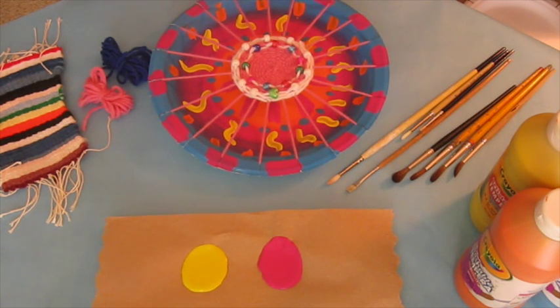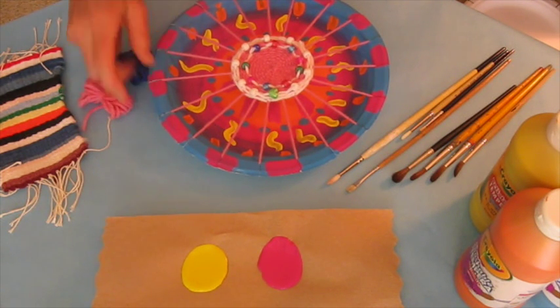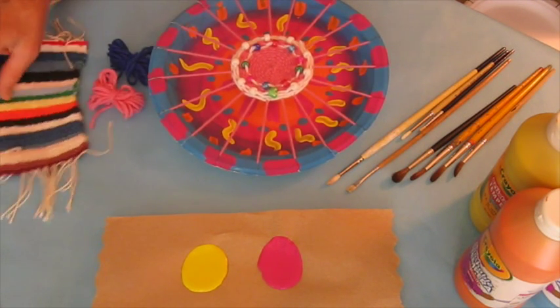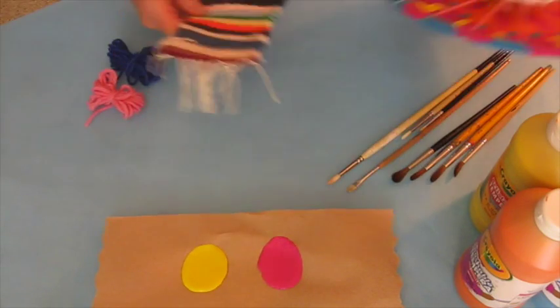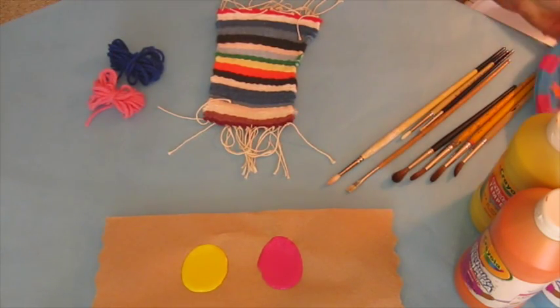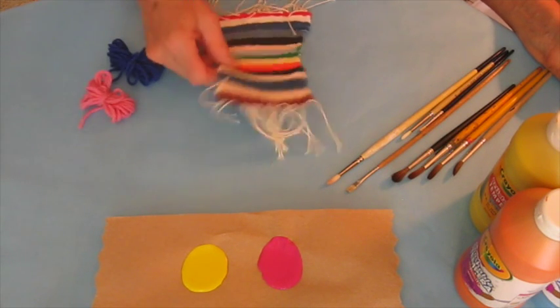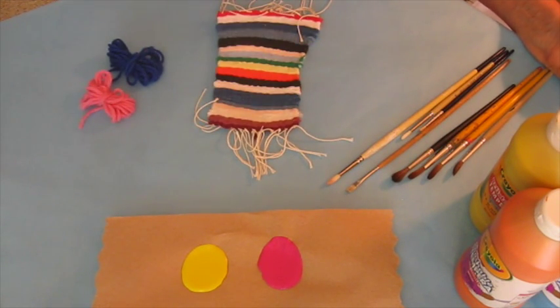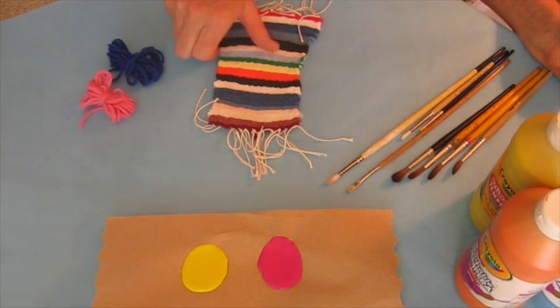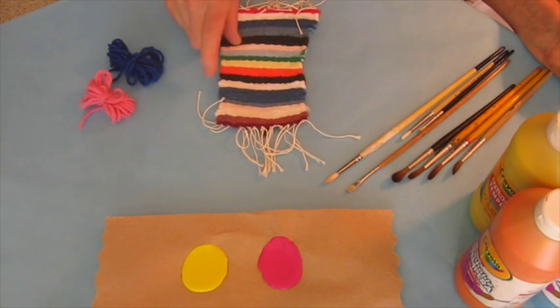Because remember back in first grade, we did weaving. We did a paper weaving on a paper loom, and we also kept the loom, just like we're going to keep the loom on here. Usually when you're weaving, however, you're more familiar with the kinds of weaving that you do on a loom, and then you cut it off the loom, so it's actually separate. So this is a third grade project, and we won't be doing it until third grade.